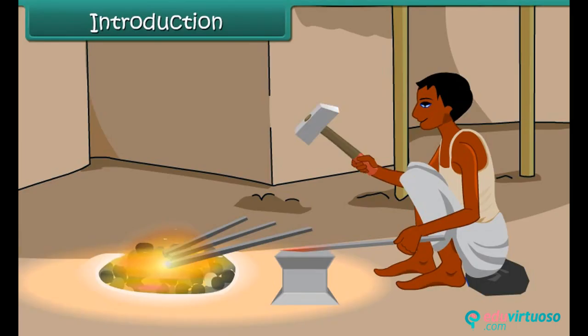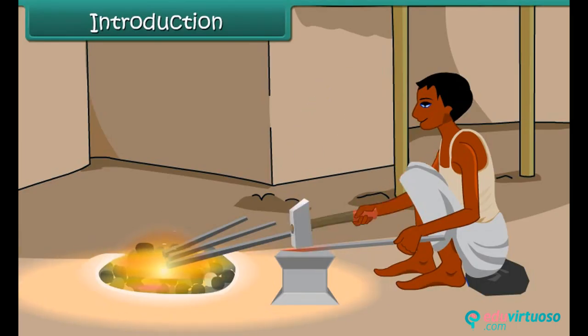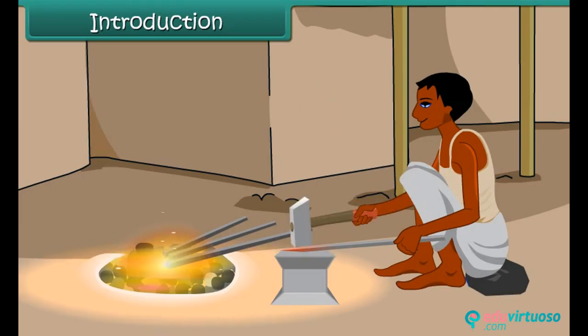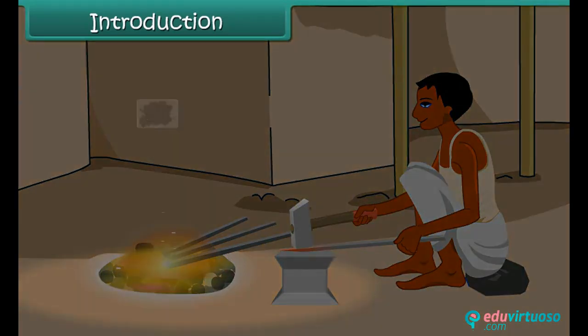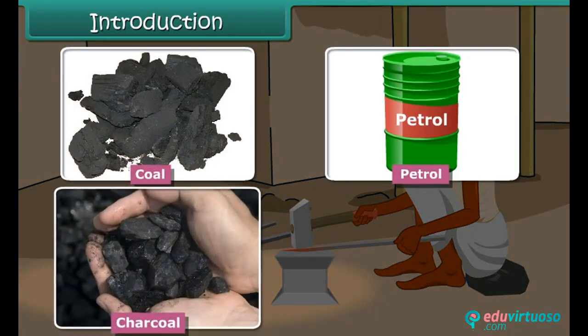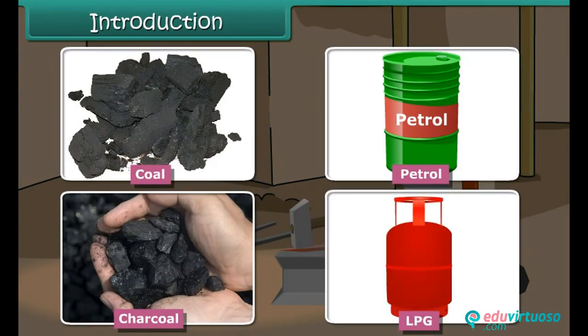The blacksmith burns coal to get hot iron which can be beaten to a desired shape. A variety of fuels is used in daily life, such as coal, petrol, charcoal, LPG, etc. Do you know which chemical process is taking place during the burning of these fuels? It is combustion. In this lesson you will learn about combustion of fuels.